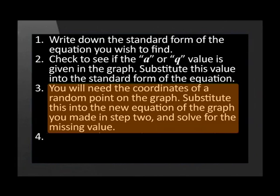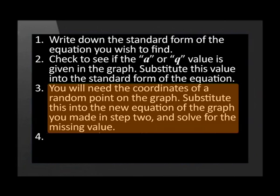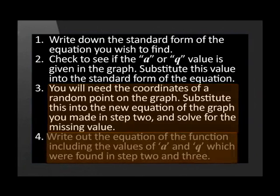Step 3: you will need the coordinates of a random point on the graph. Substitute this into the new equation of the graph you made in step 2 and solve for the missing value. Step 4: write out the equation of the function including the values of a and q which were found in steps 2 and 3.